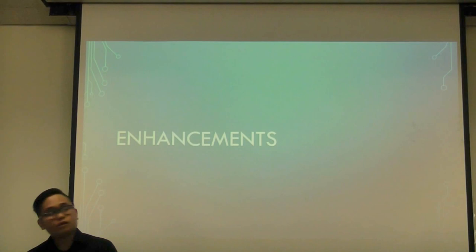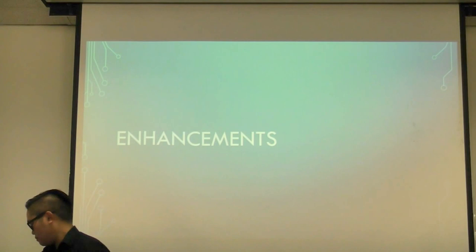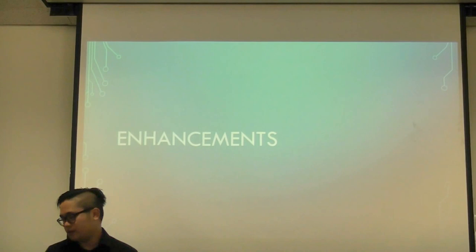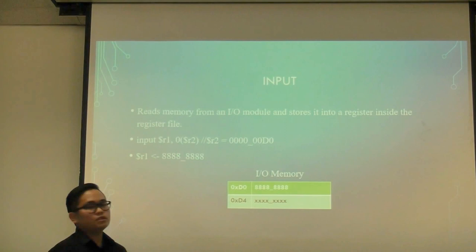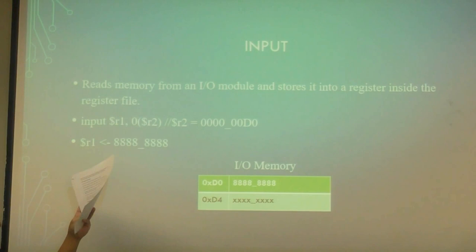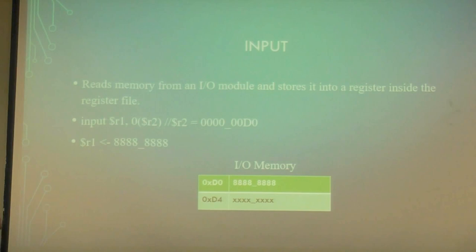Here are our enhancements. The first one we will talk about is input. Input reads memory from an IO module and stores it into a register inside the register file. So input, register one, offset being zero, and register two having the value of D0. D0 has a value of 8888, and that value will be stored into R1.